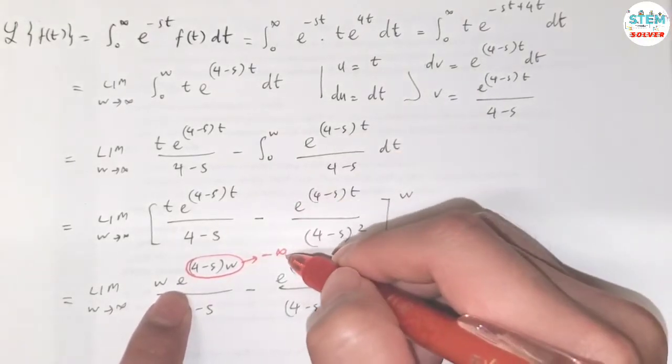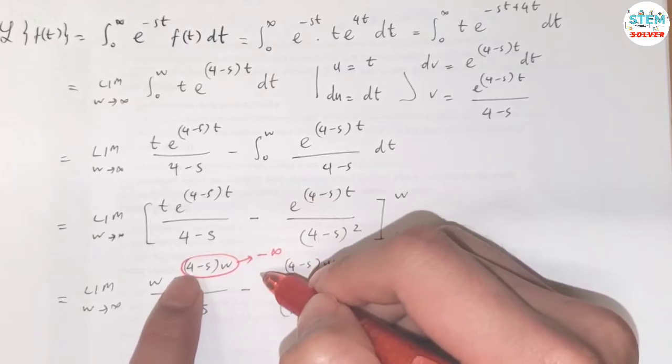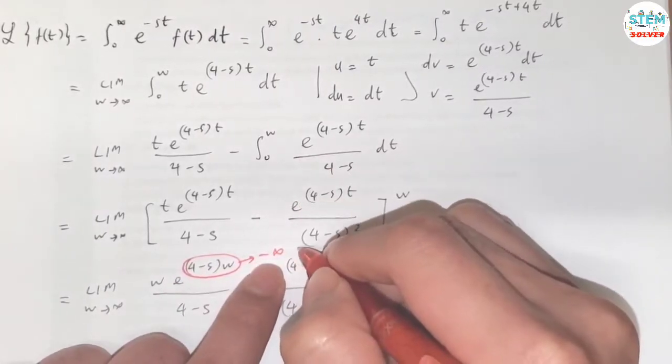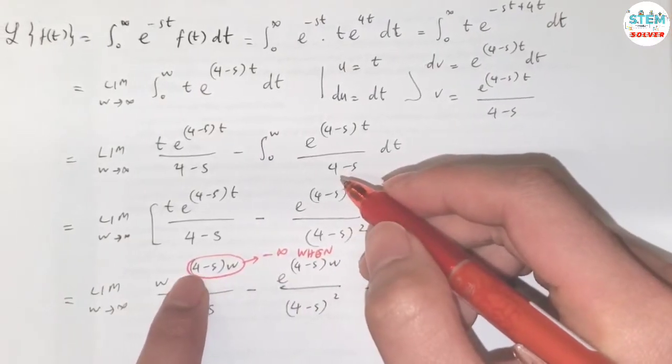So you have the limit of e to the negative infinity equals 0. So this goes to 0 when the exponent goes to negative infinity. And this happens when s greater than 4.